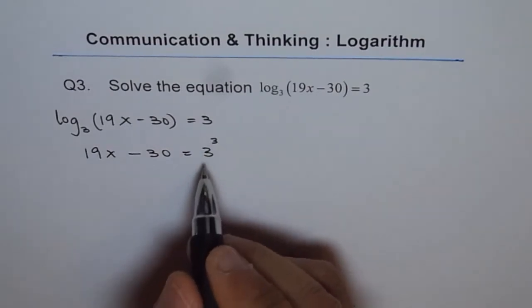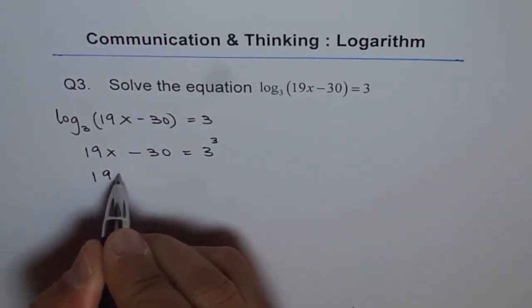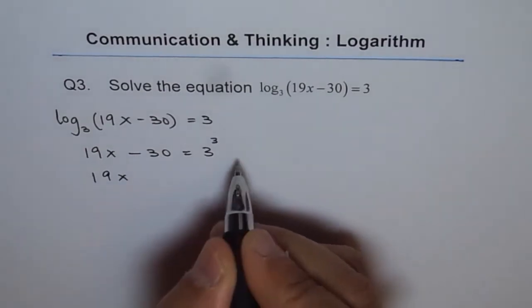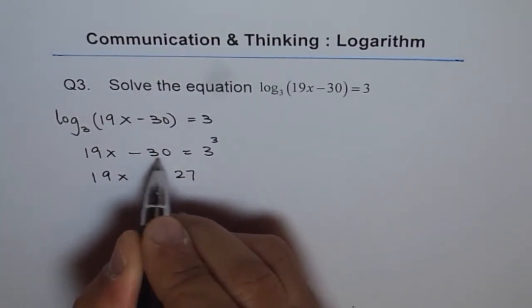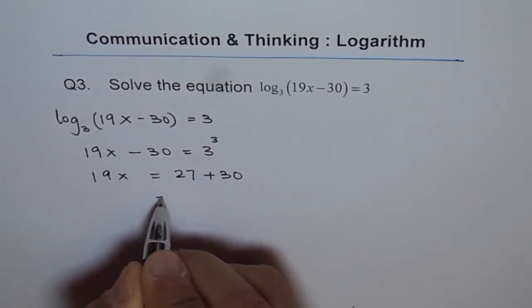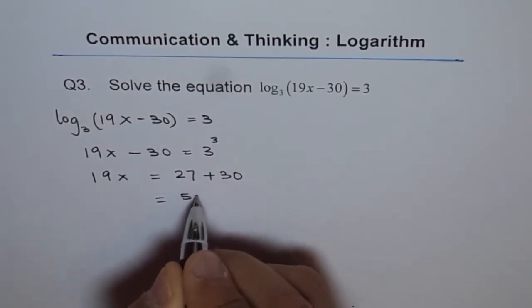Now 3 to the power of 3 is 27. We can write this as 19x, and we will take 30 to the right side, equals 27 plus 30, which is 57, right?